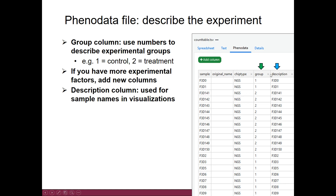The description column has a special function — the text here is used for sample names in visualizations. So you can control what is shown in visualizations by writing the names here.